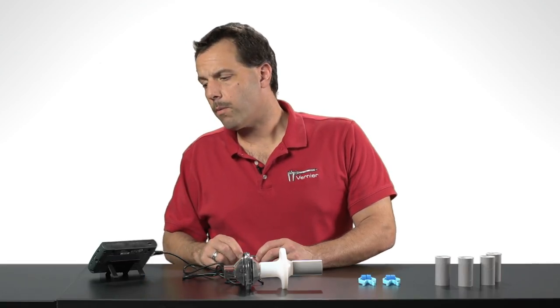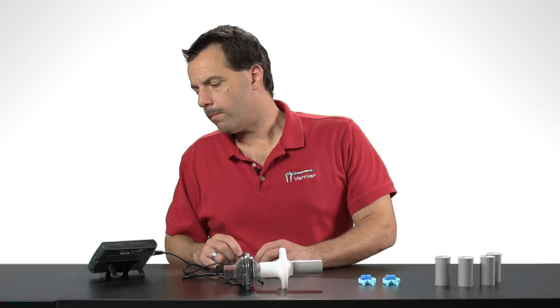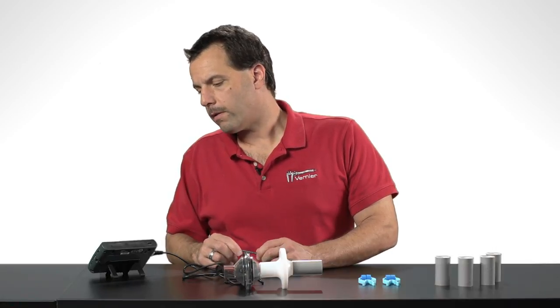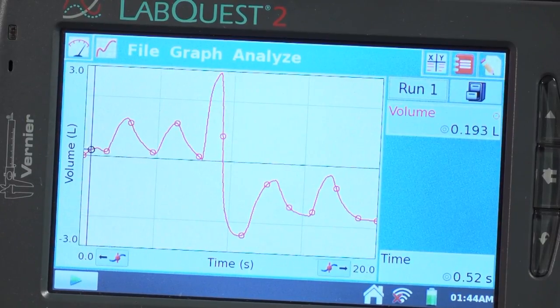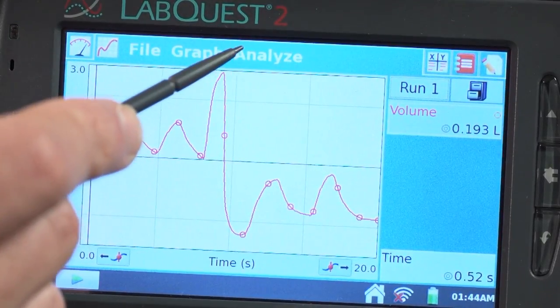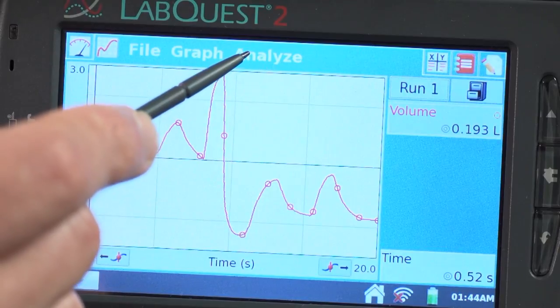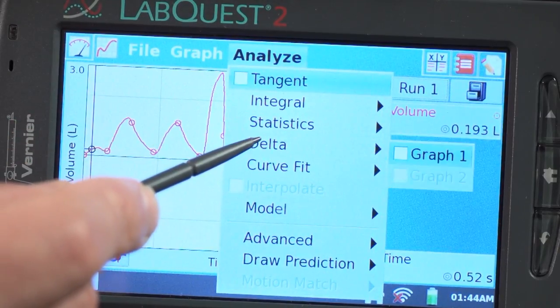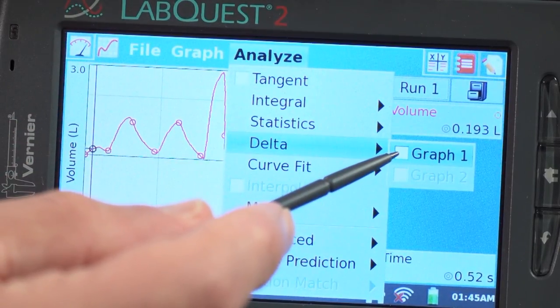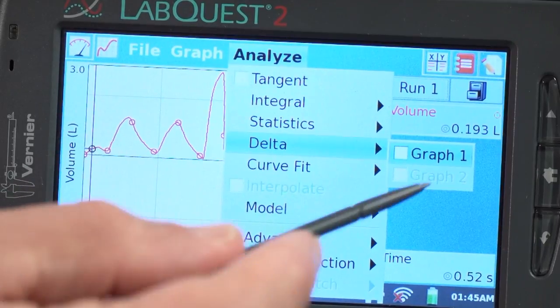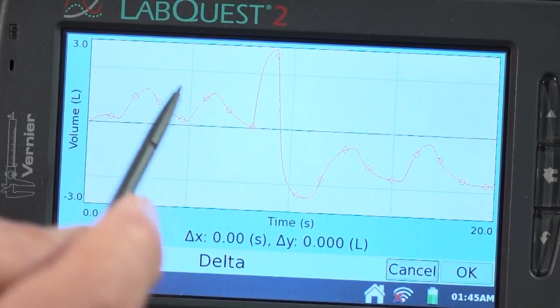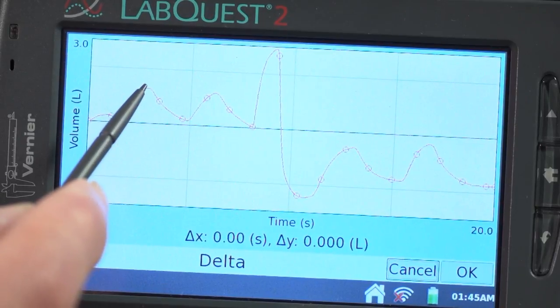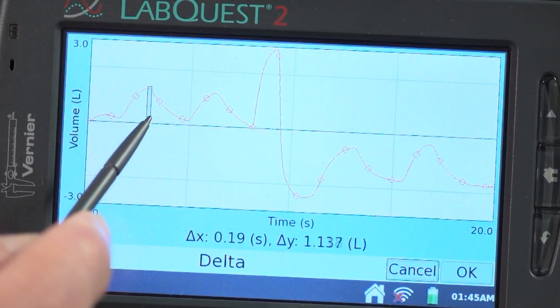Now there is another way to calculate tidal volumes or to look at the difference in an X and a Y coordinate if I make a selection. And that's using what we call the delta window. And if I go to Analyze here, I can also go to Delta. I'm going to select Graph 1 because Graph 1 is on volume.